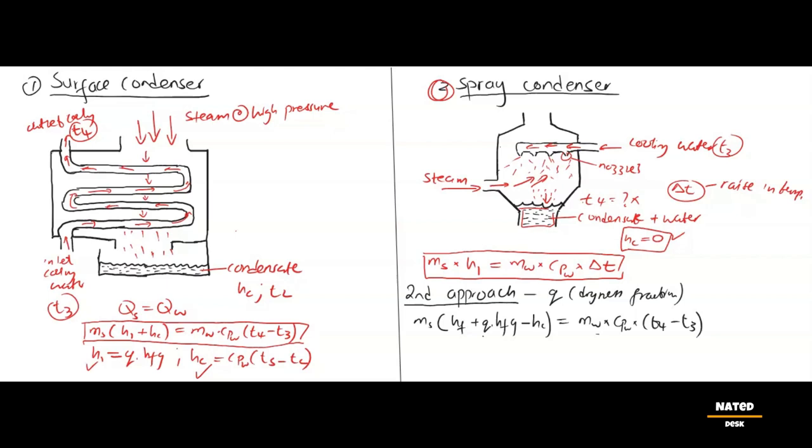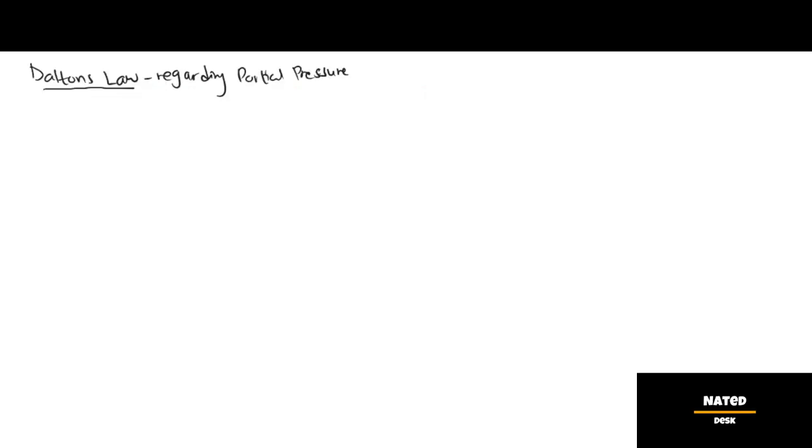The law states that the pressure exerted by mixture of gases or vapor is equal to the sum of the individual pressures of each gas. It can be written as an equation which says absolute condenser pressure P equals the steam pressure PS plus partial pressure of air PA.